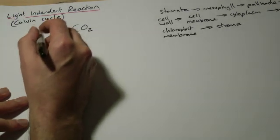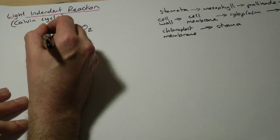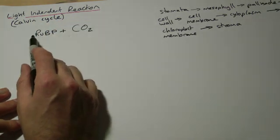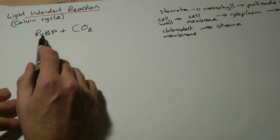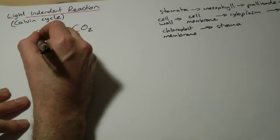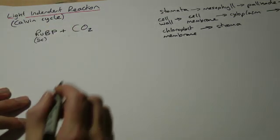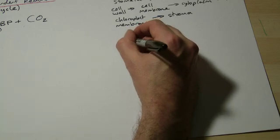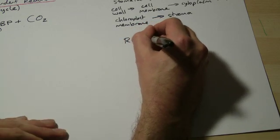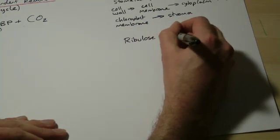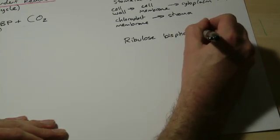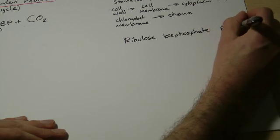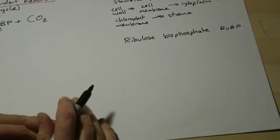Back to the Calvin cycle. The first step is that carbon dioxide is combined with ribulose bisphosphate, which is a five-carbon compound. An important tip: there are quite a few different compounds in here. The first time you refer to these molecules, you should always use the full name. After that, it's perfectly fine to use the abbreviation.